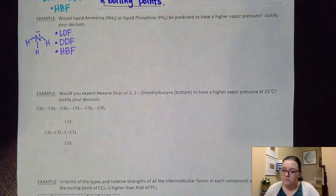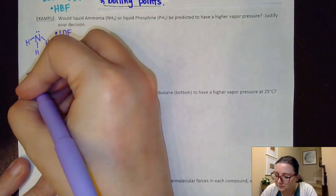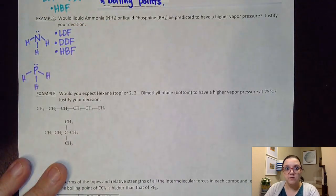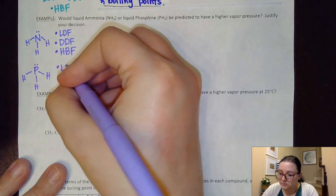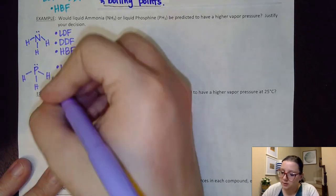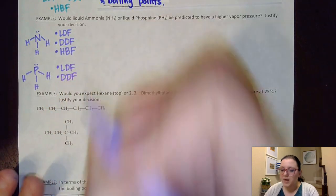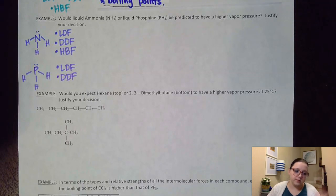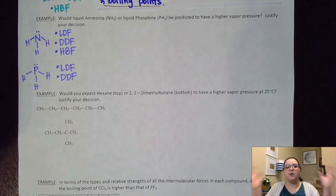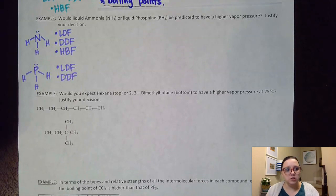For phosphine, PH₃, it's also covalent so I know I have London dispersion forces present. It is polar — very unsymmetrical, so bond dipoles would not cancel out — so I know I have dipole-dipole forces. But I don't see hydrogen bonded to nitrogen, oxygen, or fluorine. I have hydrogen present, but it's not bonded to one of the three special elements, so I don't have that extra type here.